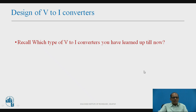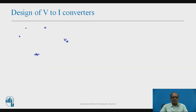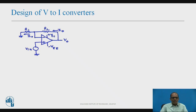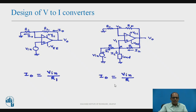Now recall the types of V to I converters learned so far. We have learned 4 different V to I converters. The first is V to I converter with floating load, with design equation I0 = φ_in / R1, where R_L is the load. The second is V to I converter with grounded load, with design equation I0 = φ_in / R, where R1 = Rf = R, and all resistances are R.